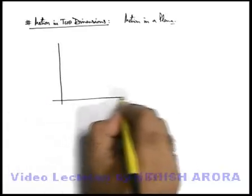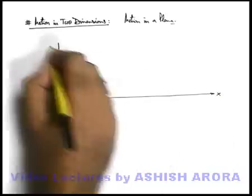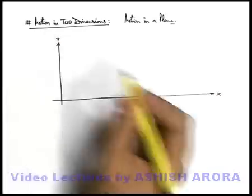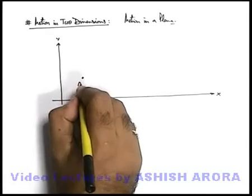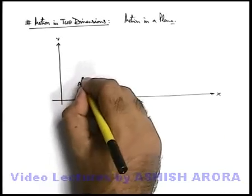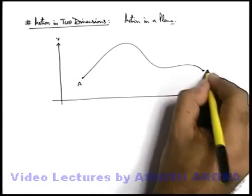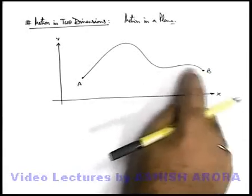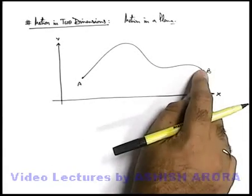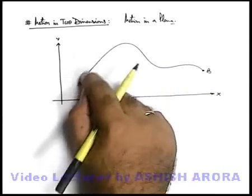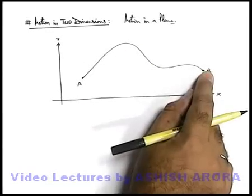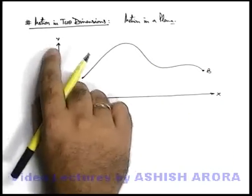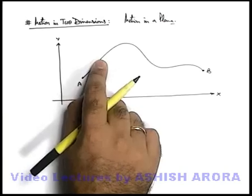In a 2-dimensional coordinate system, if we analyze a 2D motion — say if a particle starts from point A and goes to a point B following a curved path — this is a 2-dimensional motion because, as the particle is moving, its x-coordinate as well as its y-coordinate are both simultaneously changing.